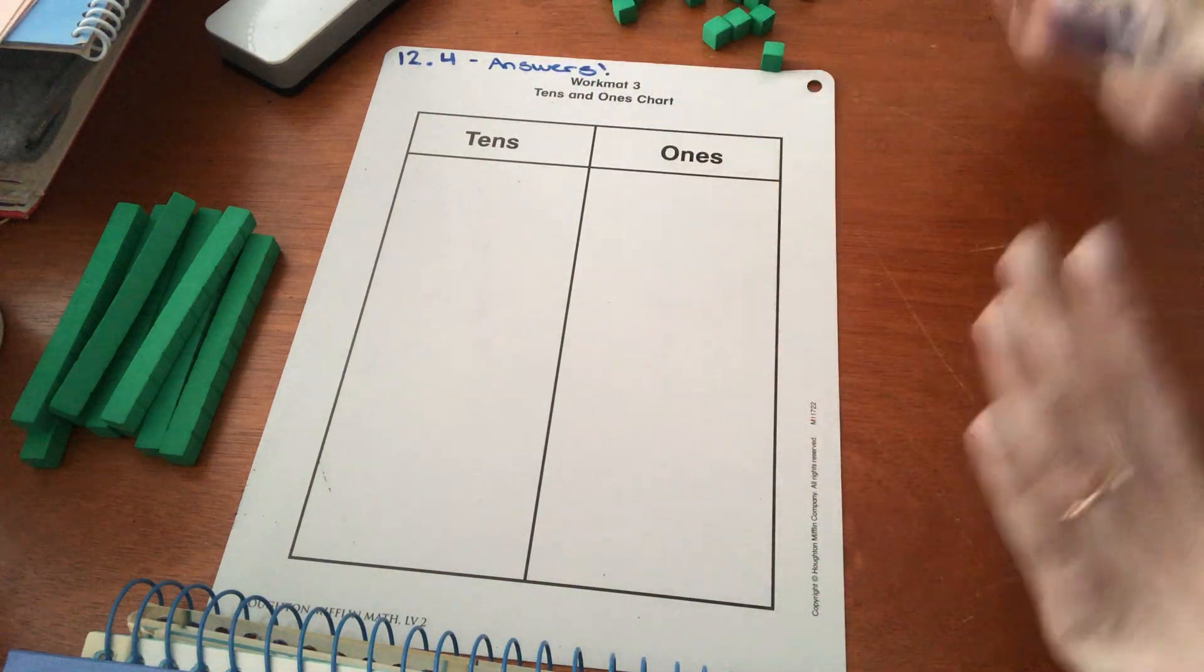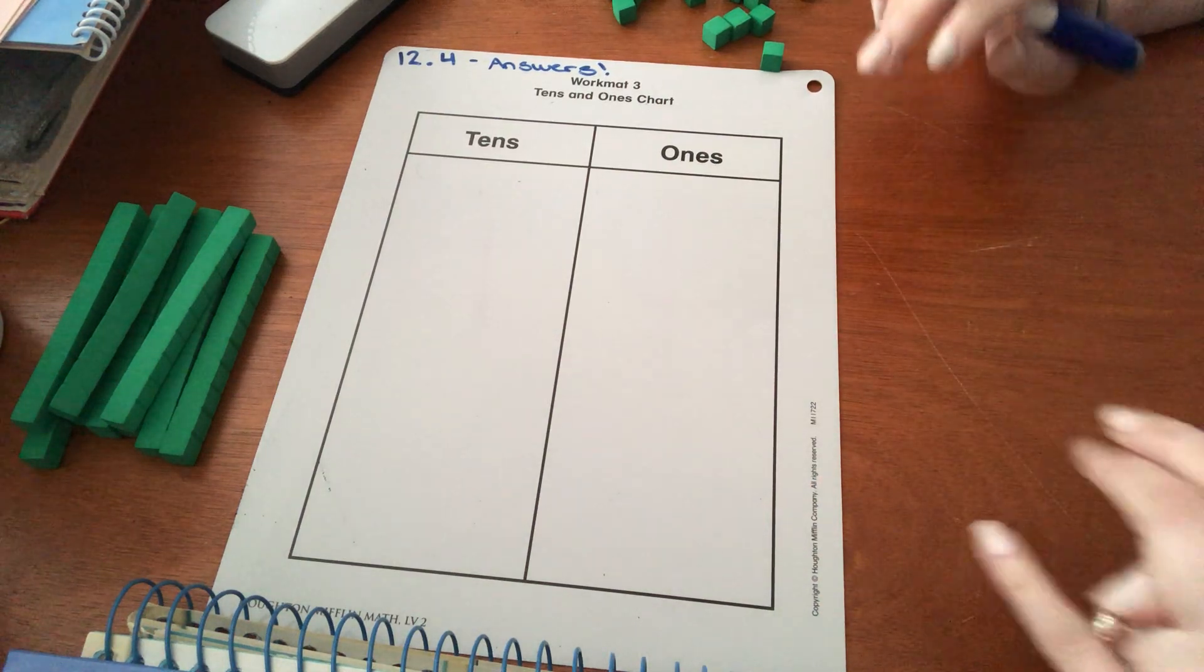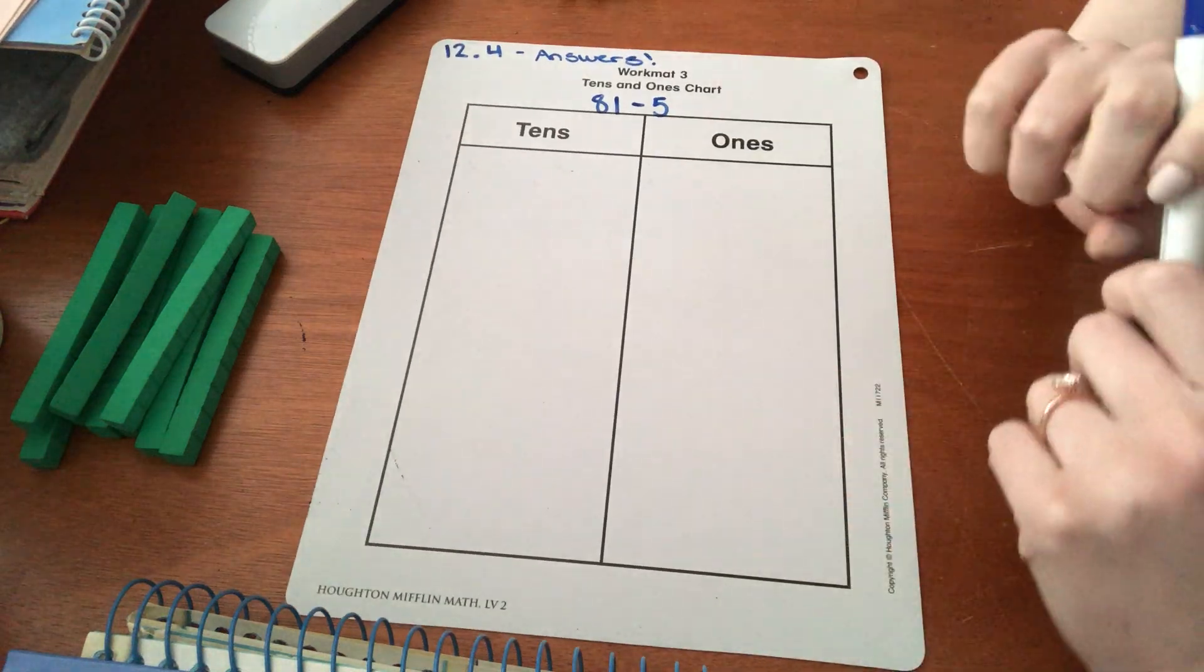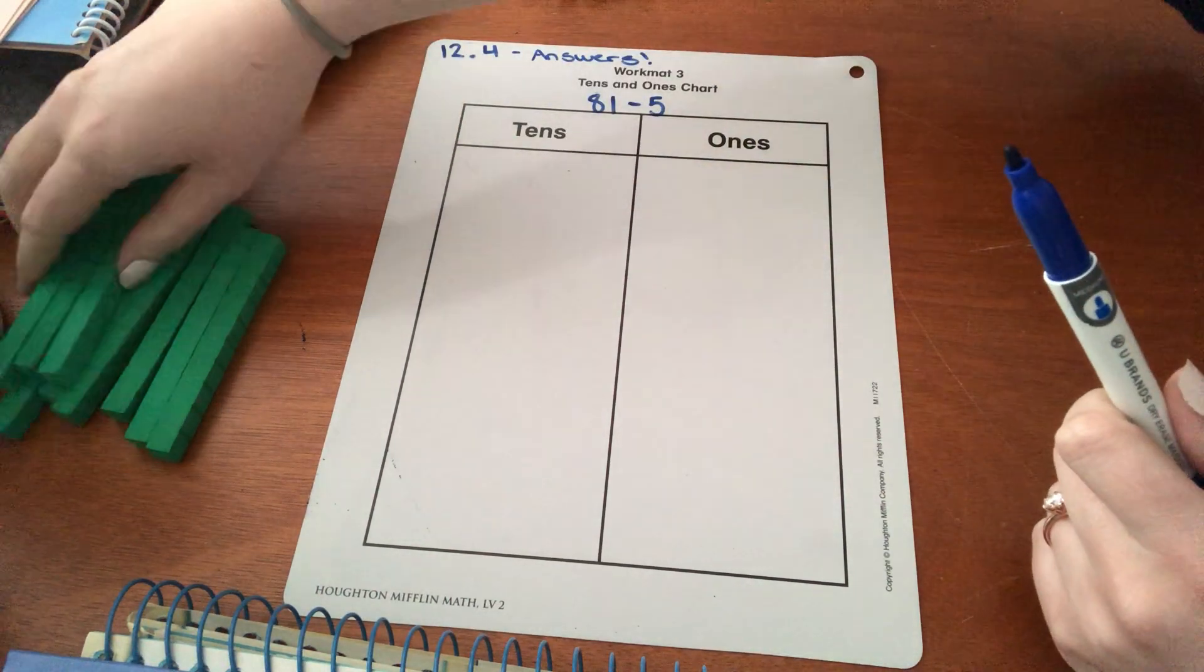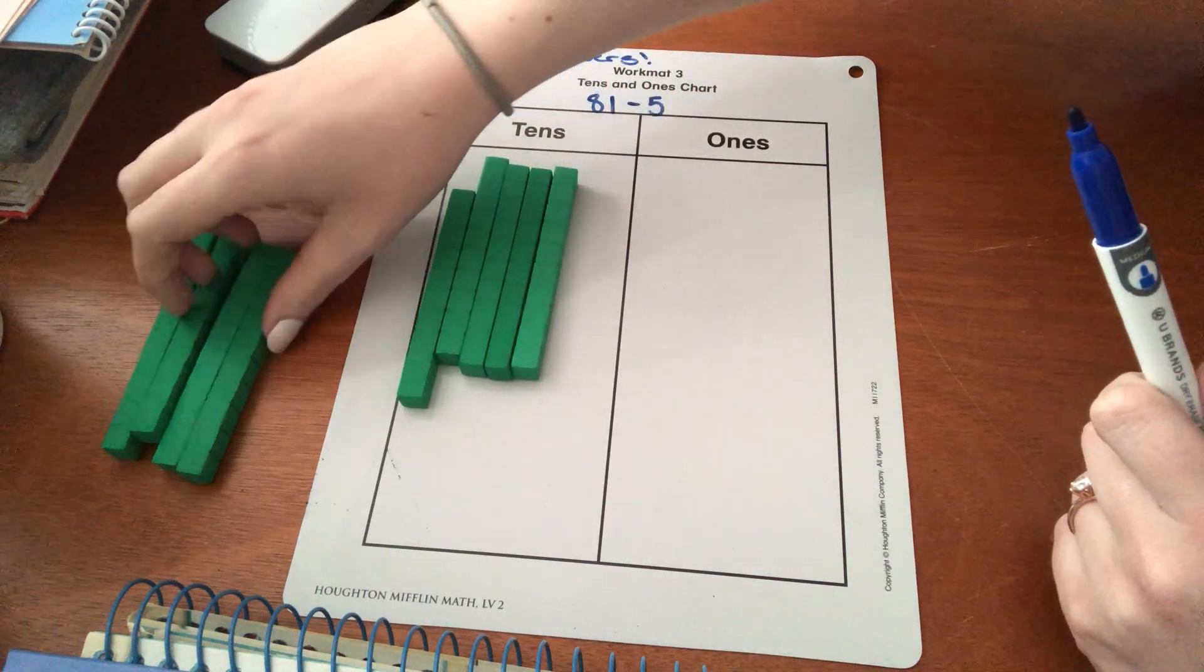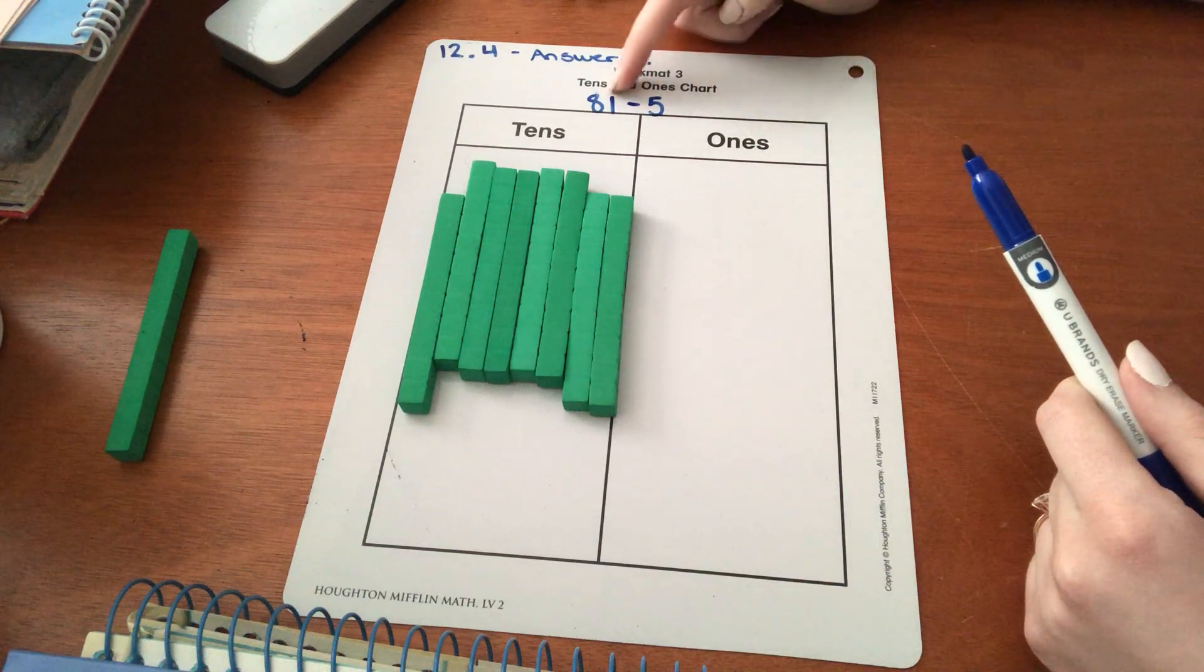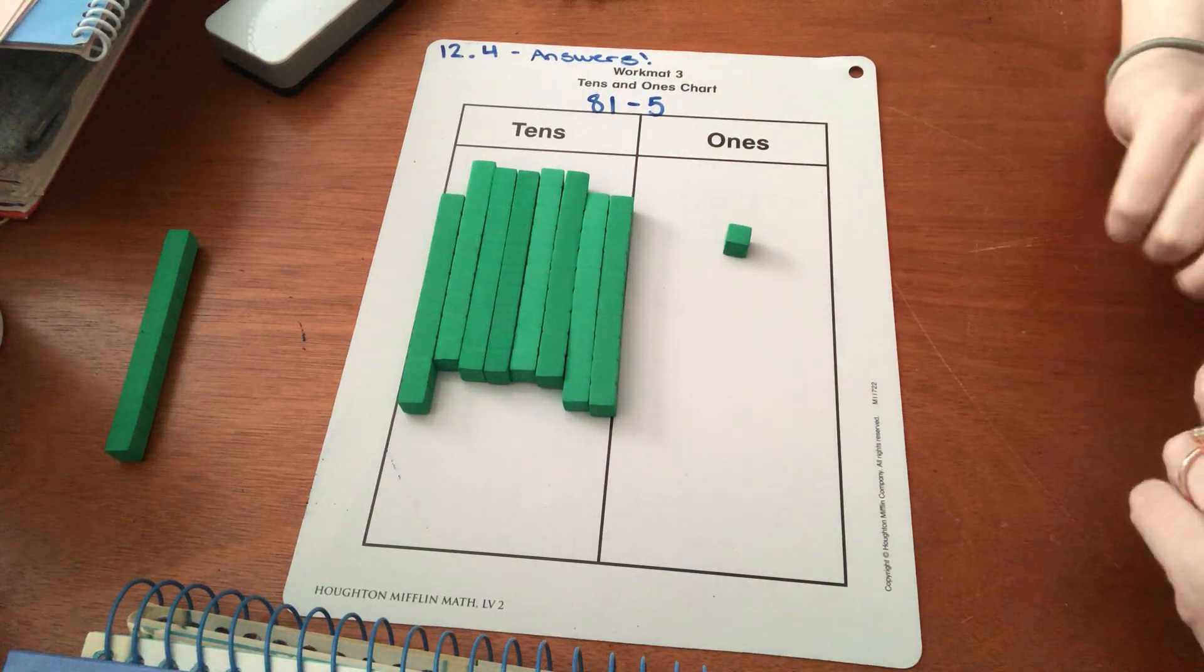I'm going to go ahead. Now we are on to question number eight. The last question. So my question here says 81 minus five. The bigger number here is 81. So that's what I have to put on this chart. Let's go ahead and get our eight ten sticks. One, two, three, four, five, six, seven, eight. Cool. Just barely fits. How many ones do I need to put in the ones place? Yeah, you're right. Just one. Oh my gosh. I don't know about you. I am sweating. That was hard work.